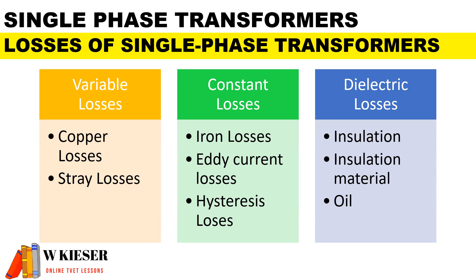For constant losses due to the iron core, we have two types of iron losses: eddy current losses and hysteresis losses. Eddy current losses create unwanted heat and energy loss, and in order to reduce the effects of eddy current losses, we use laminated steel sheets.